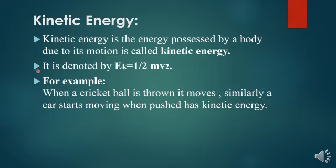Kinetic energy is denoted by Ek, which is equal to half mv squared. This is the formula for kinetic energy: KE = ½mv². In the next slides we will derive this formula.